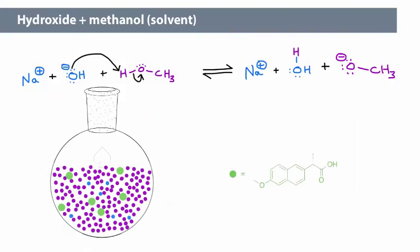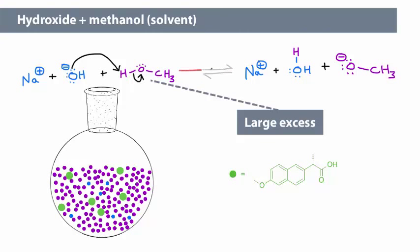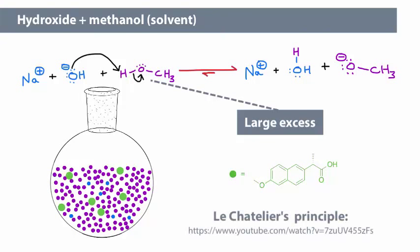However, the solvent is present in a very large excess. What effect will that have on the position of the equilibrium? Le Chatelier's principle tells us that when one reactant is present in a large excess, the equilibrium will shift, or be pushed, toward the product side. If you want, you can review Le Chatelier's principle using this external link.